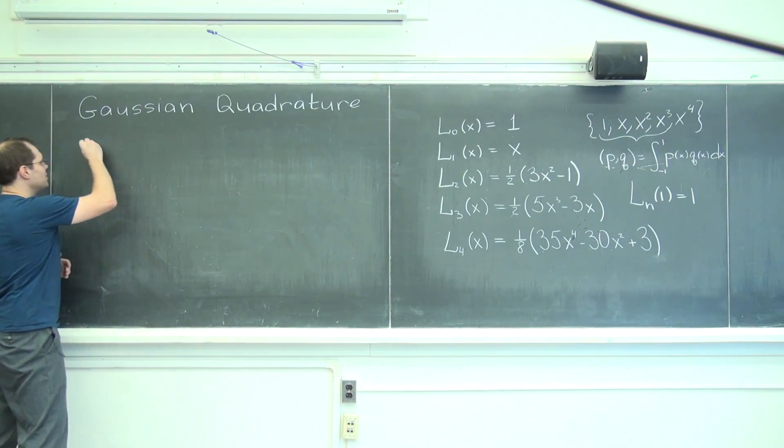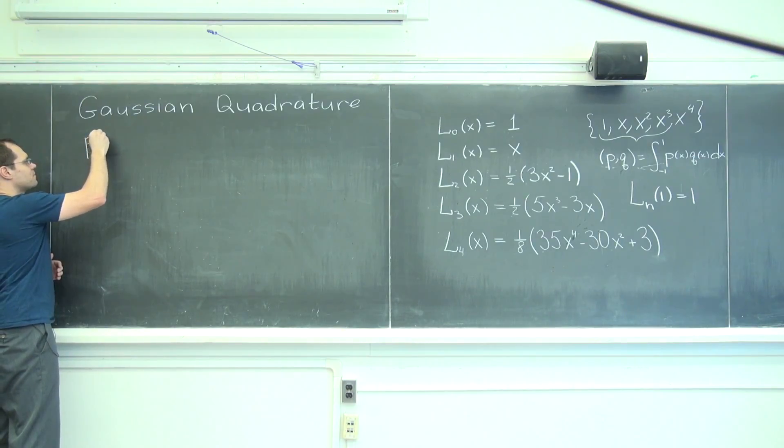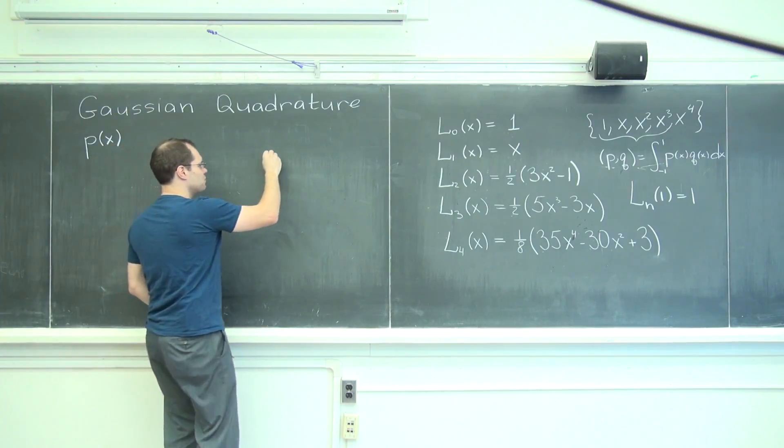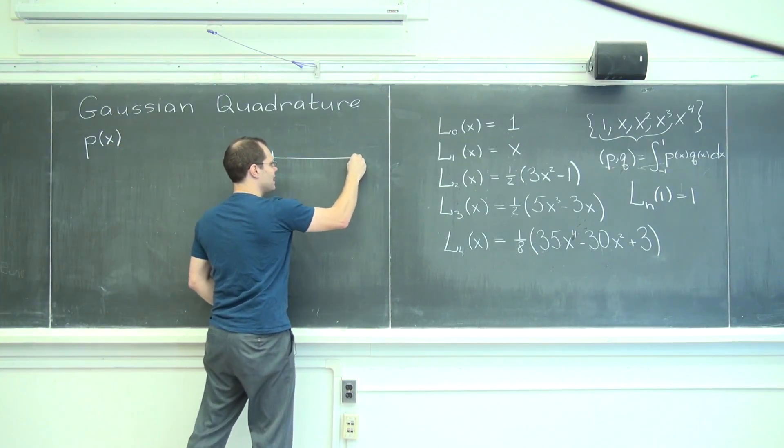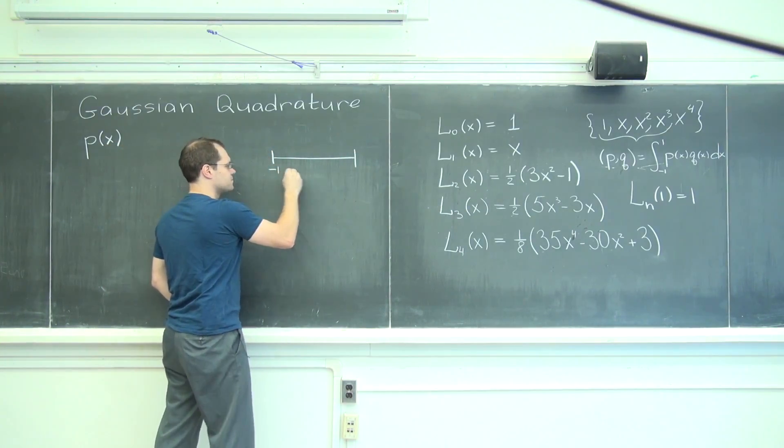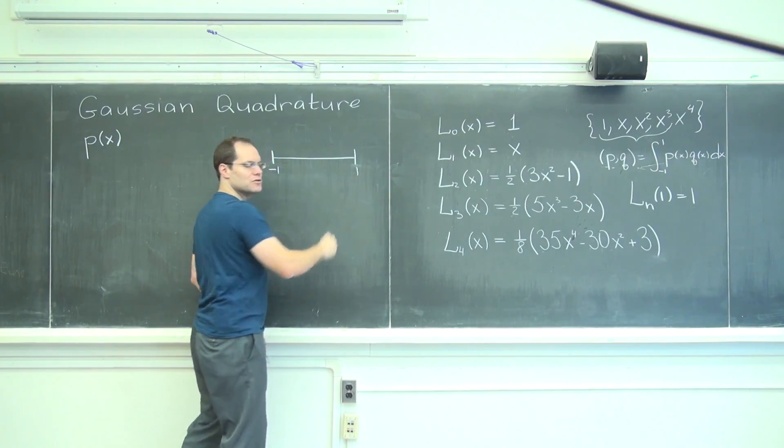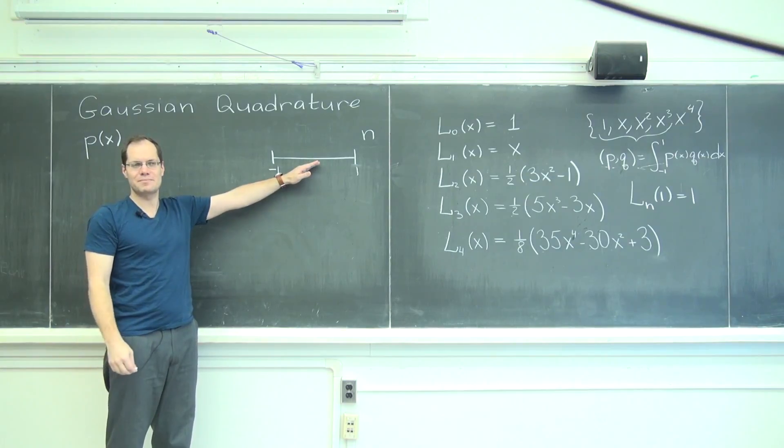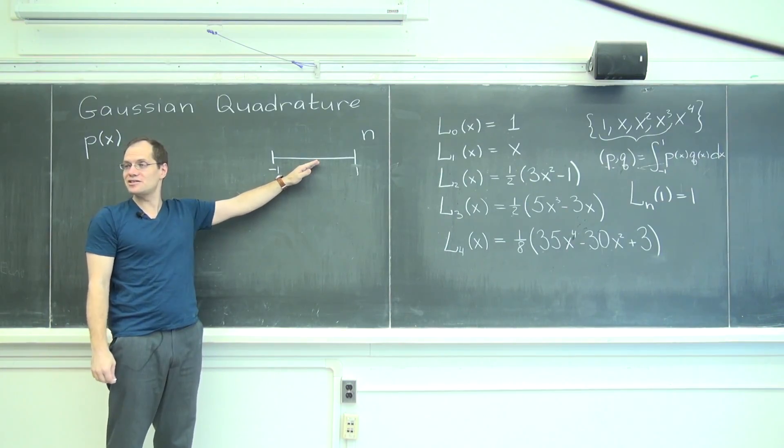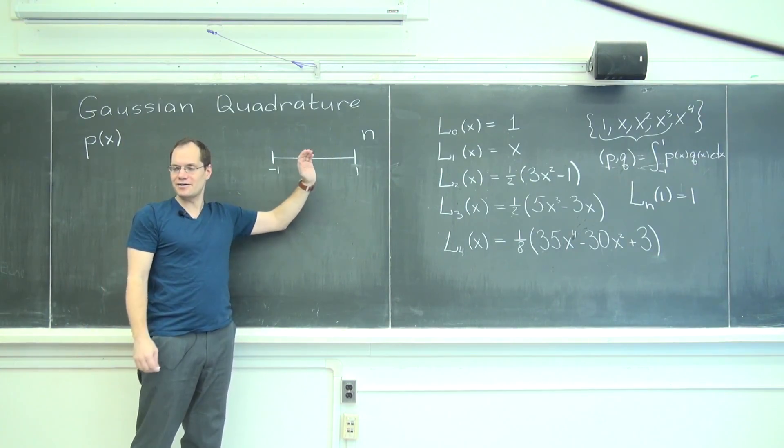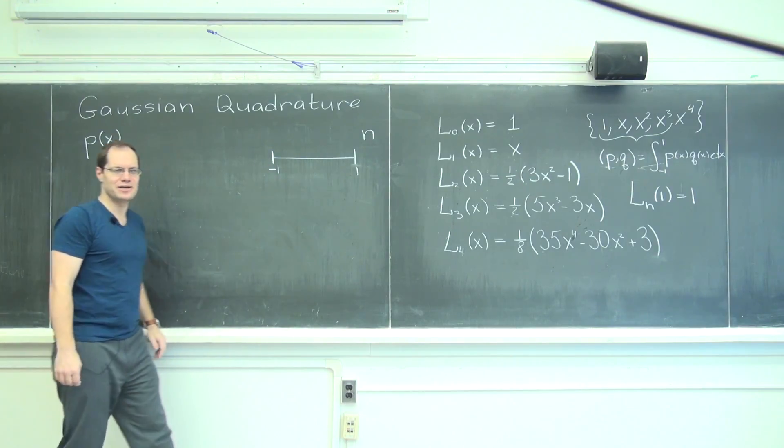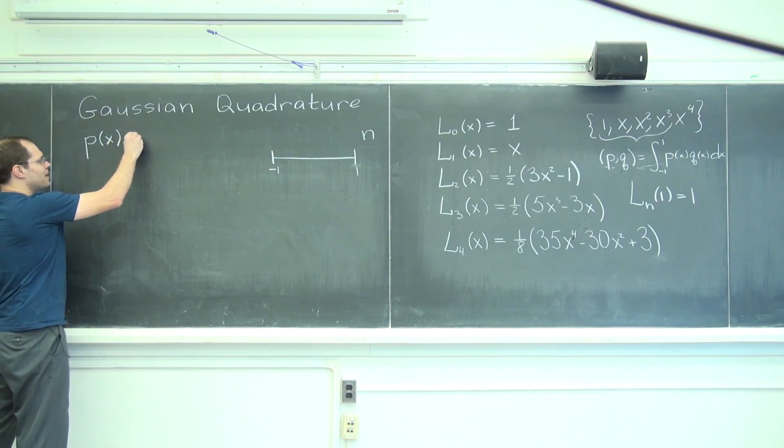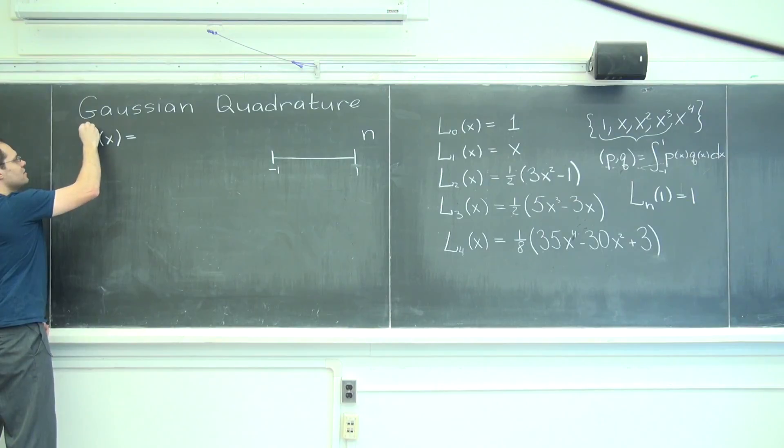So here's what we have. We have a polynomial p(x) and let's agree that we still have a segment from minus 1 to 1 and we're still allowed to place n points on this segment from minus 1 to 1. The question is, where? Well, I'll tell you where. This polynomial is of degree up to 2n minus 1.